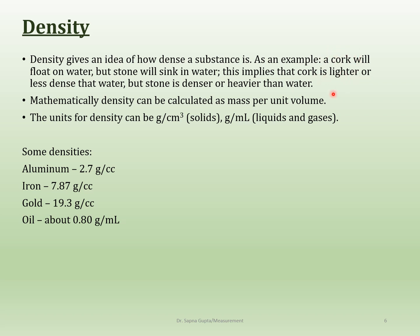For example, cork will float on water but a stone will sink, because for the same size, stone has a heavier mass. The reason water is used as a reference is that water has a density of exactly 1 gram per milliliter — meaning every 1 mL of water weighs 1 gram. Water has very clean reference values: freezing at 0°C, boiling at 100°C, and a density of 1. It's a beautiful substance.